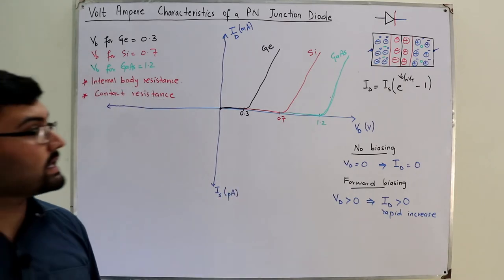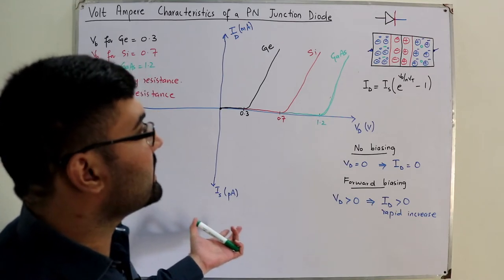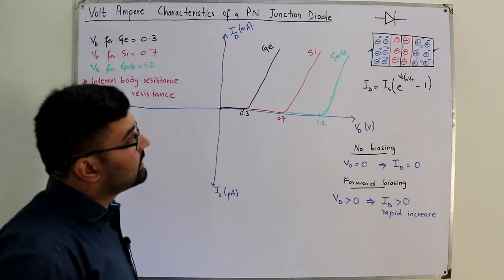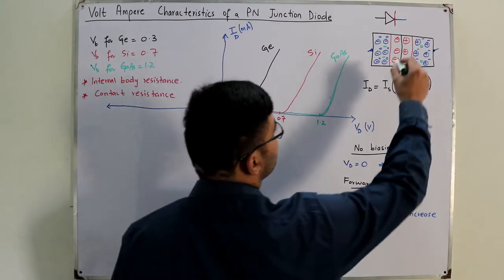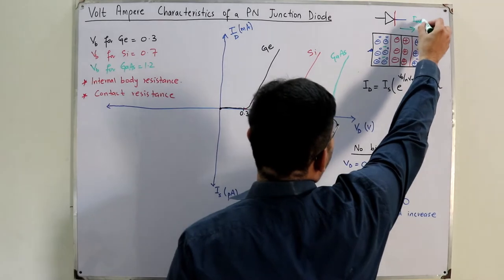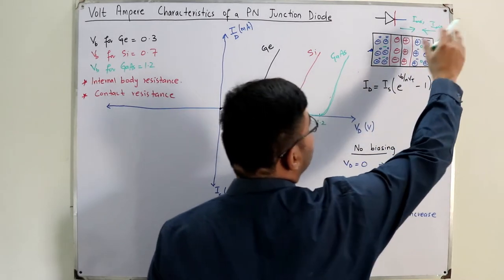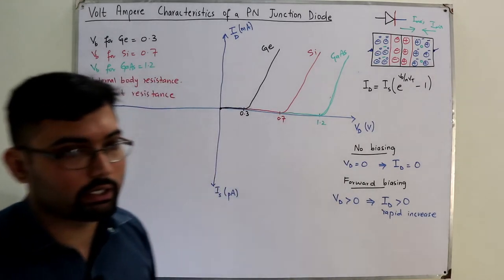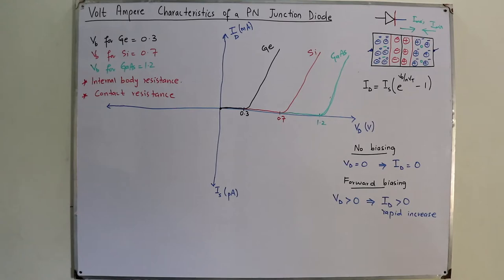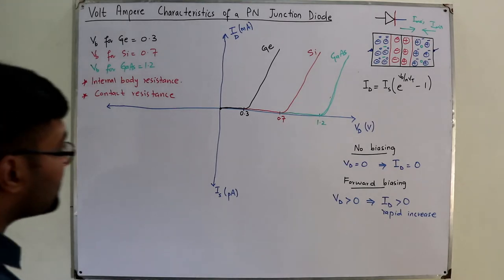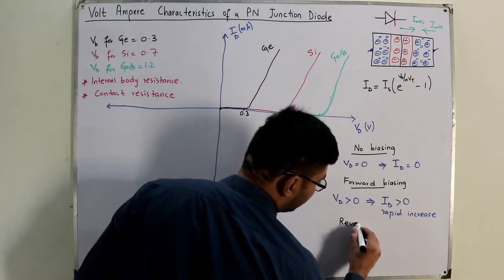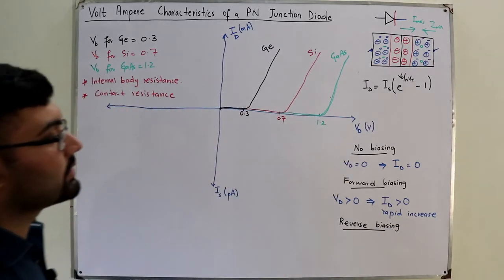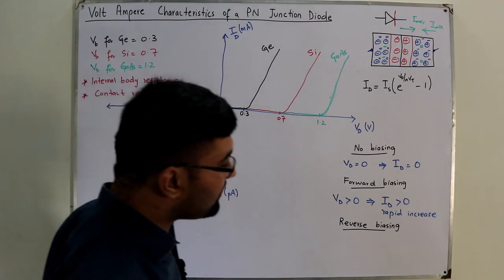This is the forward biasing case. In forward biasing, the majority charge carriers are responsible for the current — majority current flows in one direction, minority current in the other, and the net direction depends on the applied voltage.